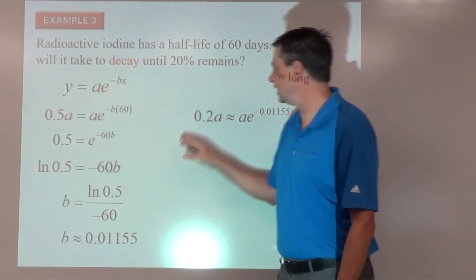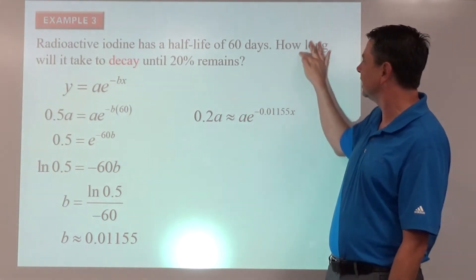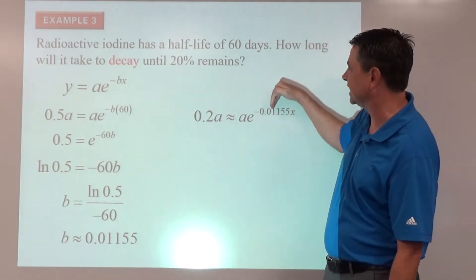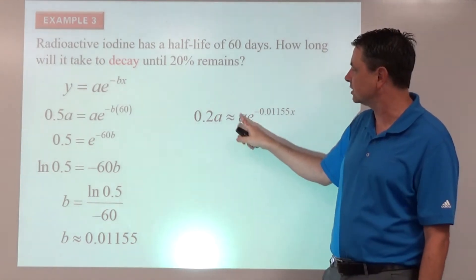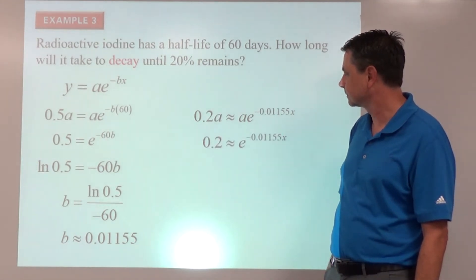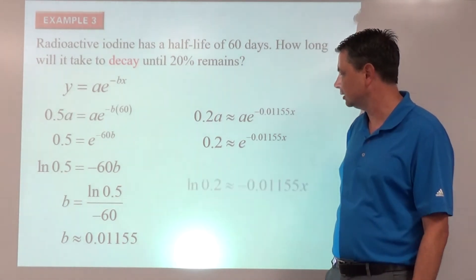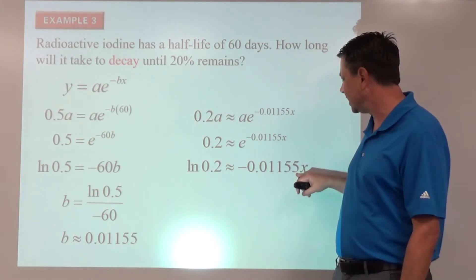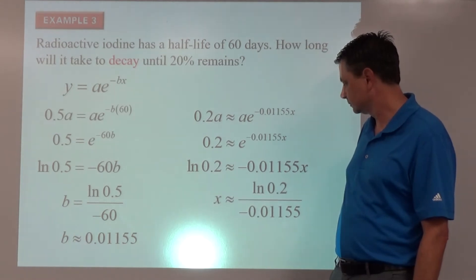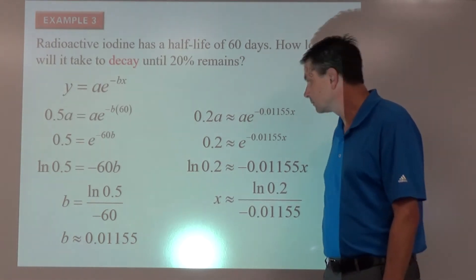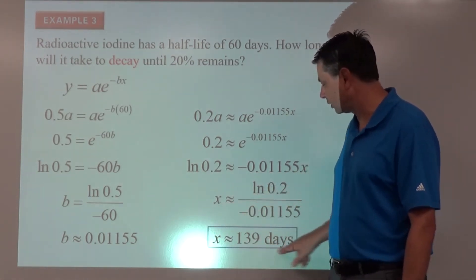So now what's going to be remaining is 20% of the original amount. Here's our original amount, e times. We now don't know x because that's the how long. That's our time. And here's now our b value. So once again, solving in a similar fashion, divide both sides by a. Move the base to the other side to become the base of the logarithm, natural log. Dividing by this value, our b value is going to get our x. So x would be about 139 days.